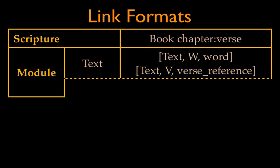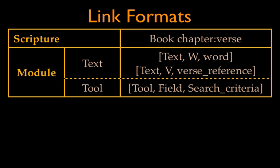A text link begins with the name of the text, followed by a comma and a space, then either a W for word search or a V for verse search, followed by a comma and a space, then the search criteria. Tool links have the name of the tool, followed by a comma and a space, then the search field, a comma and a space, and the search criteria.